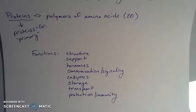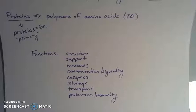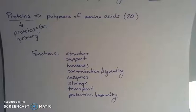Some of this would be things like structure, so we get things like keratin or collagen that are structural. Support, like actin fibers in our muscles. Hormones, oxytocin. Communication and signaling. Enzymes, these are biological catalysts that help to speed up biological reactions.